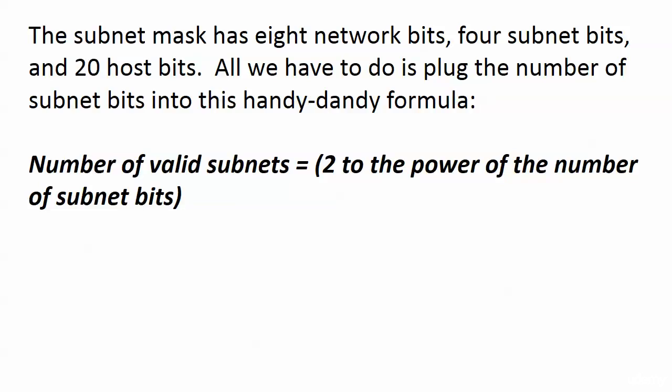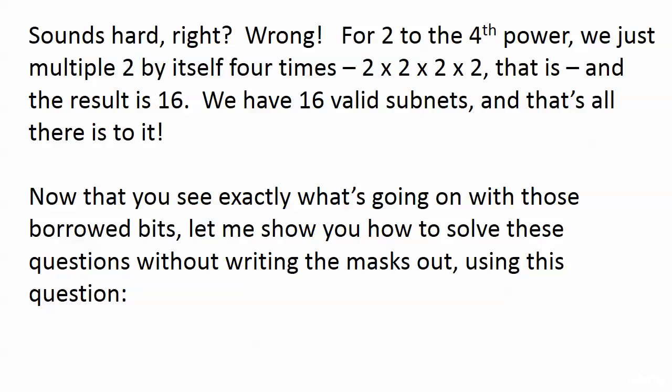Here's why we care: we have to plug the number of subnet bits into this handy-dandy formula. I hesitate to even call it a formula because that makes it sound complicated - it's not. The number of valid subnets equals 2 to the power of the number of subnet bits. We have four subnet bits. Two to the fourth power is the number of valid subnets. All you're doing is multiplying 2 by itself four times: 2 times 2 times 2 times 2. Two times two is four, four times two is eight, eight times two is 16. That's it - we have 16 valid subnets.